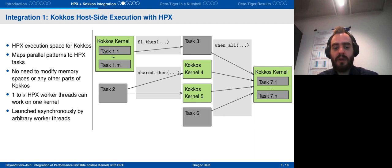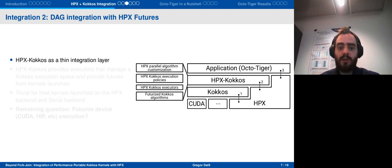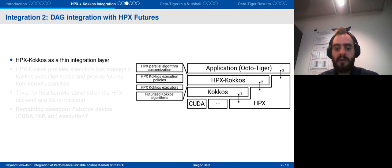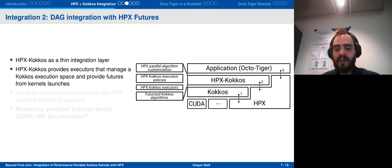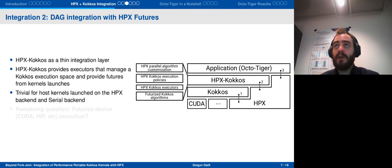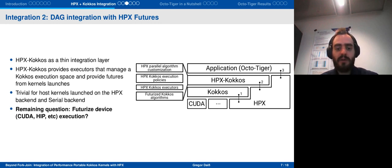The first integration doesn't fully solve the futurization issue, so there's a second integration. We introduce HPX-COCOS, which is a thin integration layer that sits on top of COCOS. The most important functionality within it are the executors. Each executor manages one COCOS execution space and can provide futures for all kernels that run on it. For host kernels, this is trivial since the HPX execution space already uses HPX. The more interesting part is how to do this for device execution.